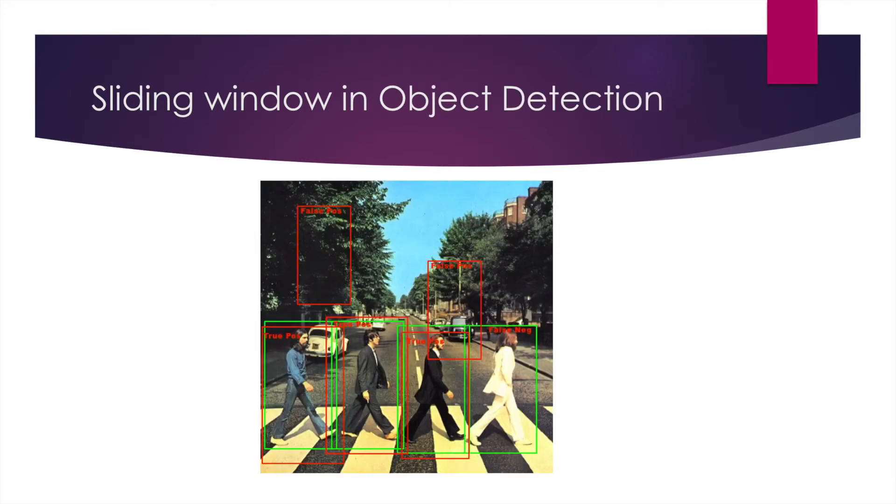Another usage of sliding window is in object detection. When we want to find people in a picture, we use a window and move this window in two dimensions. Then if we find people in this frame, we can cut this picture and give it to other modules to recognize the people.